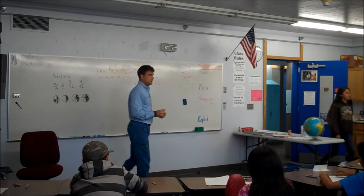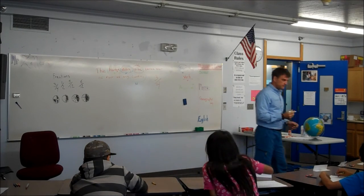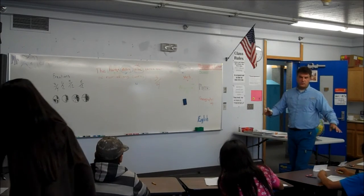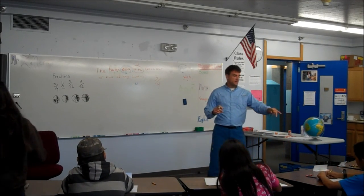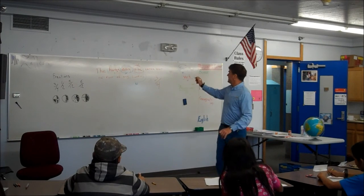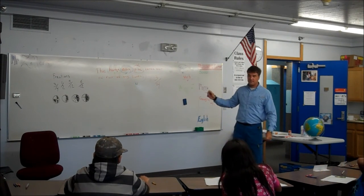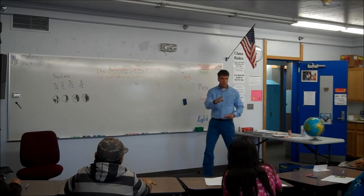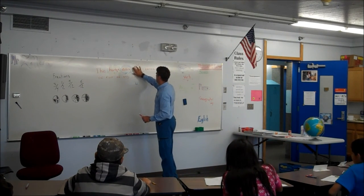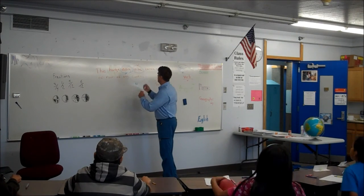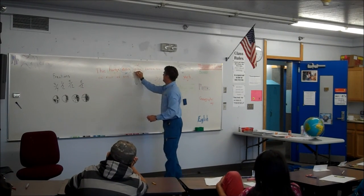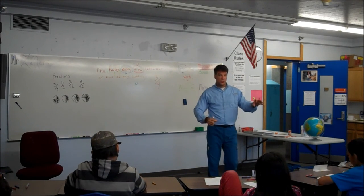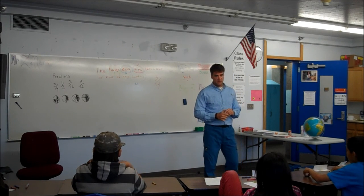Kevin told us that we circled the verb instead of underlining. So if you made a mistake, we made a mistake too — we circled it instead of underlining and then we changed it. Just scribble it out or whatever, but make sure you have a V beside the verb. For number one, make sure you remind me — let's underline the verb.